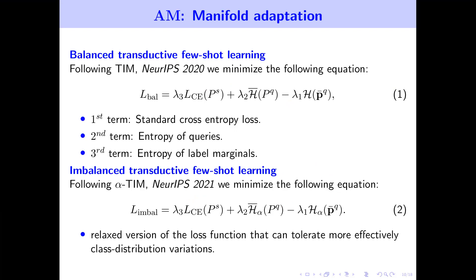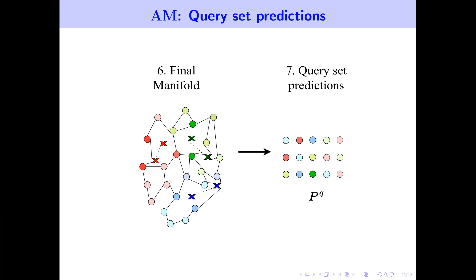We adapt the manifold in two different ways. If we have prior knowledge that the task at hand is class balanced, we minimize the loss function proposed in NeurIPS 2020, where the first term minimizes the standard cross-entropy loss, the second term minimizes the entropy of the queries, and the last term maximizes the entropy of the average predicted probability distribution of the query set. Regarding the imbalanced setting, we minimize a relaxed version of the loss function that can tolerate class distribution variations more effectively. Lastly, we use the final manifold to make predictions for every query by classifying each query to the class with the highest manifold similarity.